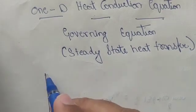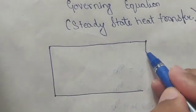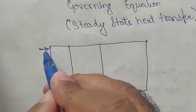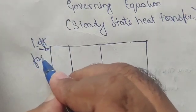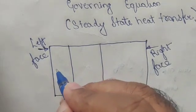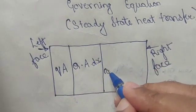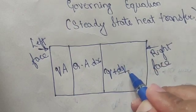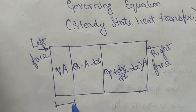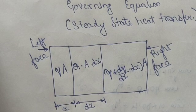This is the figure here. This will be the left face and this will be the right face. The heat flux terms are: qA on the left, q·A·dx and q plus dq·pi·dx·dx·A on the right. The distance between the faces is dx, and the x-axis is shown here.